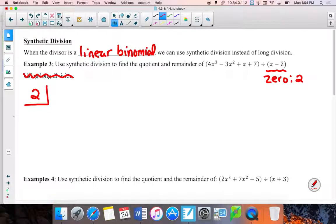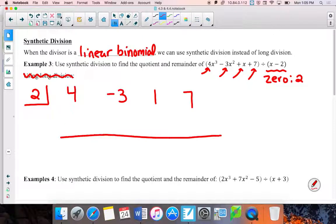The 0 goes in its own little box off to the side. Then you're going to write the numbers, just the numbers, of each term. So I'm going to take those numbers, positive 4, negative 3, positive 1, positive 7. Skip some space, draw a line.